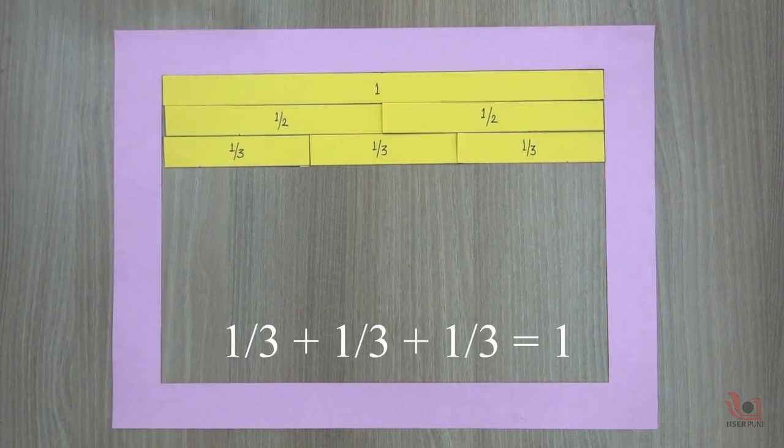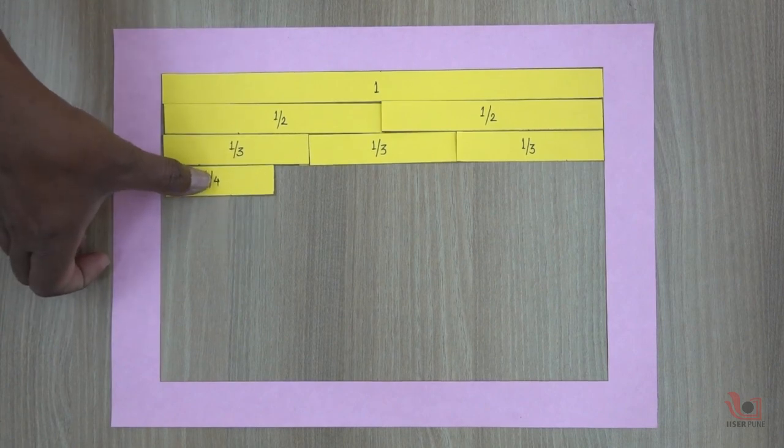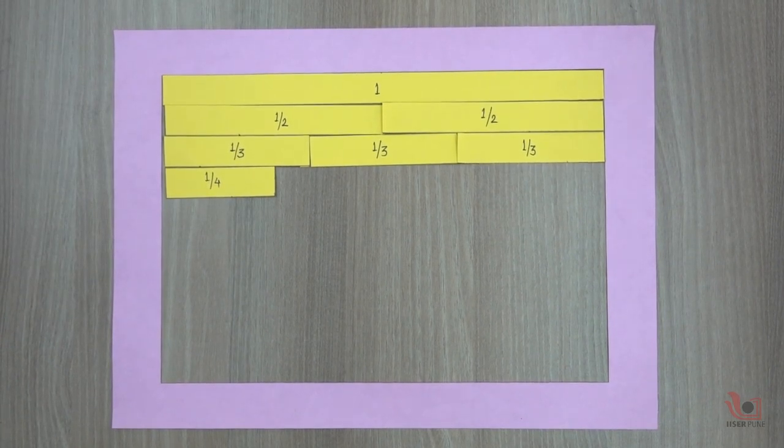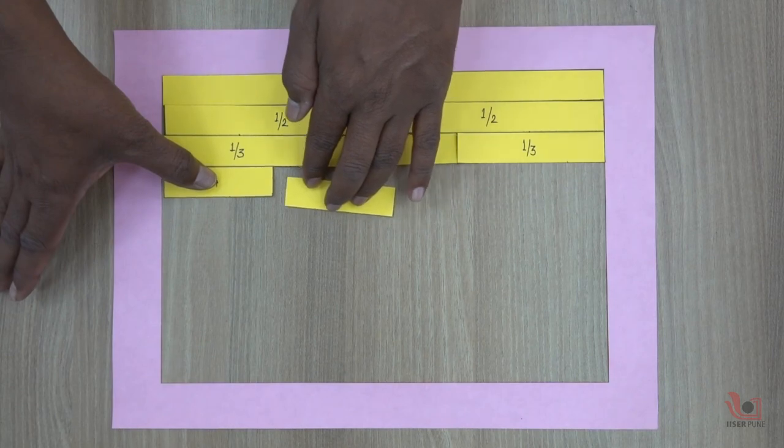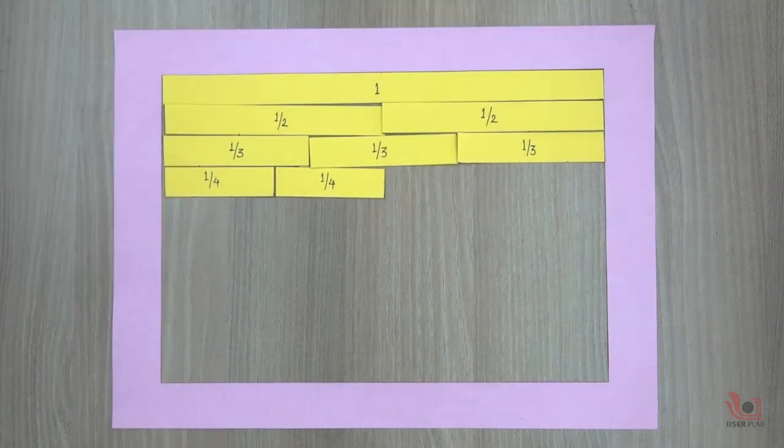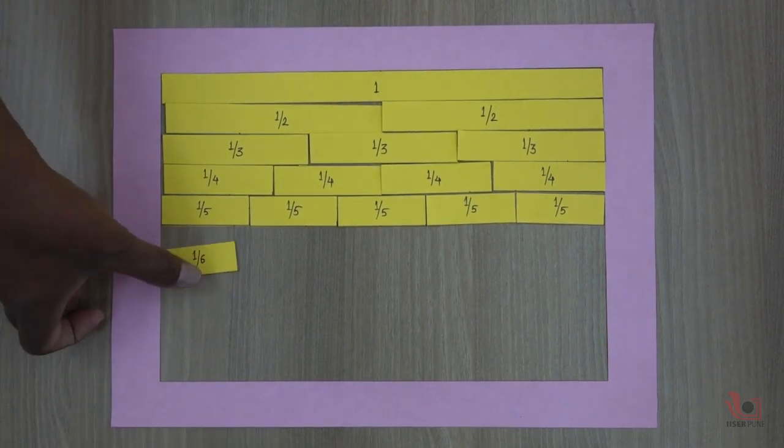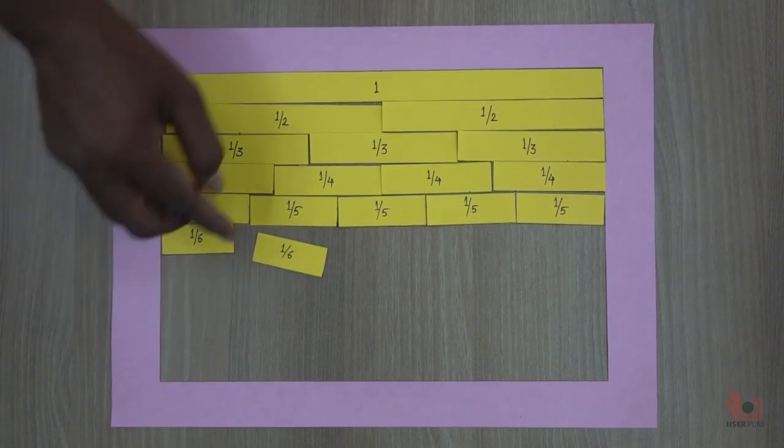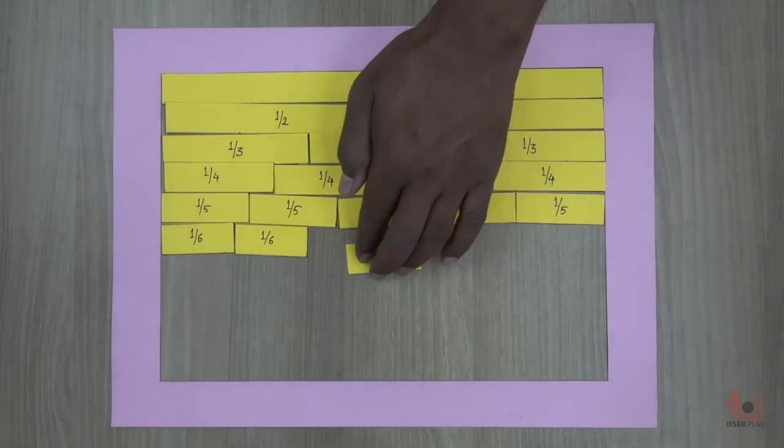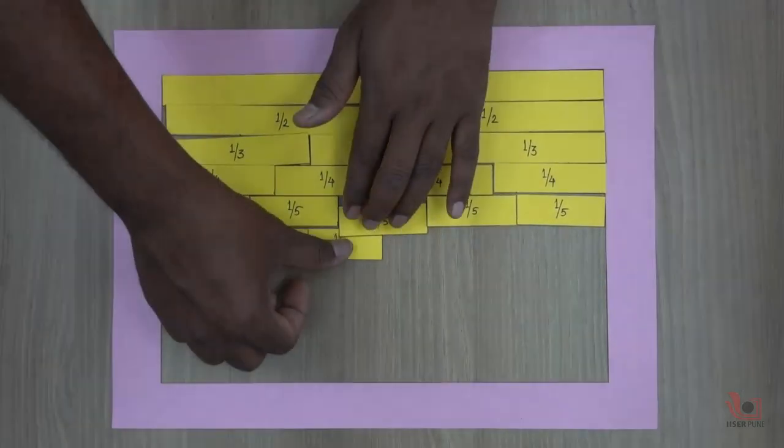Similarly, if you add 4 pieces of small strips, you will get 1 whole strip, and so on. When looking at this, one thing we should keep in mind is that we are looking at the relationship between the whole number on the top and all the fractions underneath.